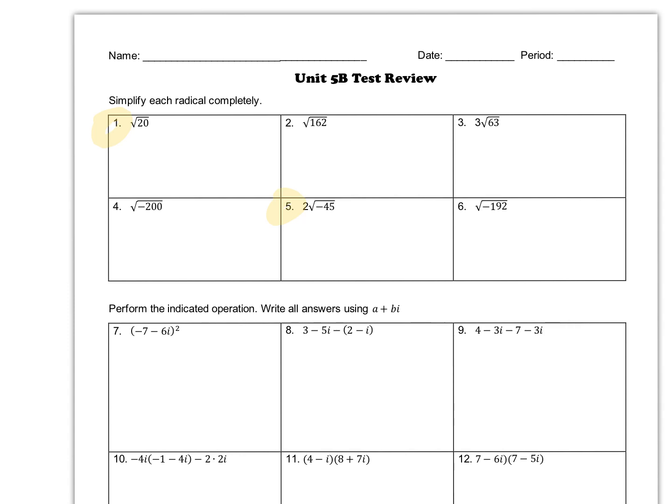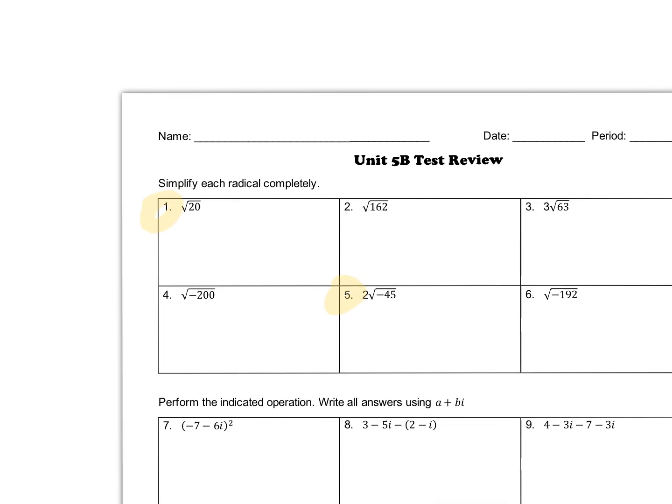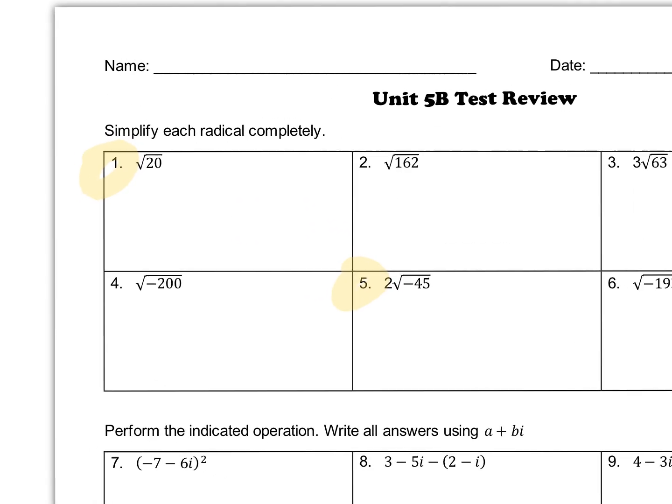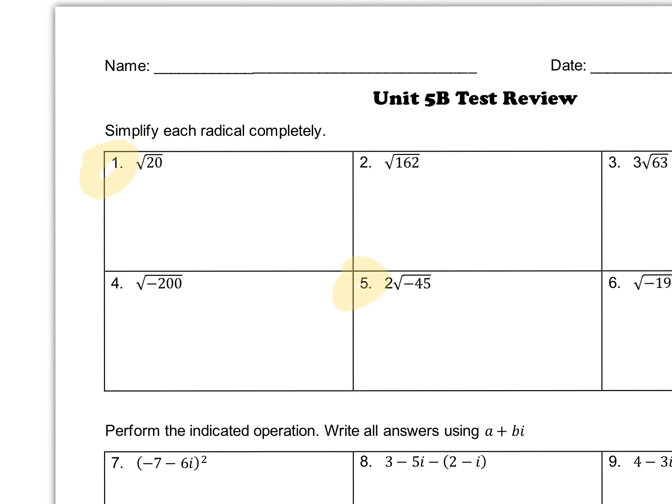Okay, in this part of the video of the Unit 5 test review, I'm just going to focus on questions 1 and 5. We're simplifying radicals, so let me zoom in on number 20 first. For number 20 it says the square root of 20.